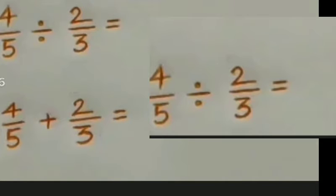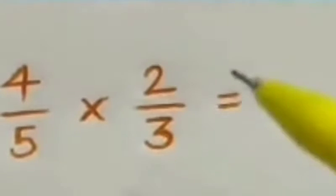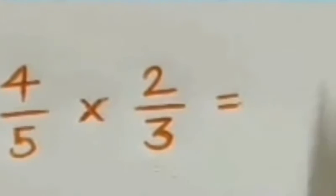So there are three fractions given. Let's go first to number one. Number one is four to the fraction of five times two to the fraction of three.